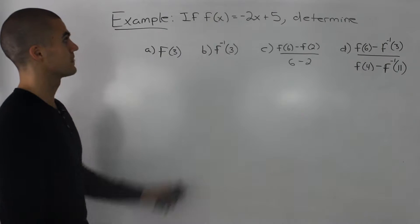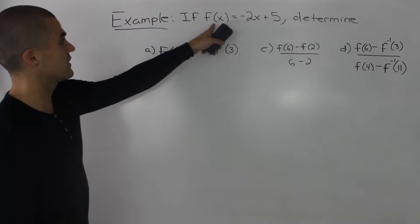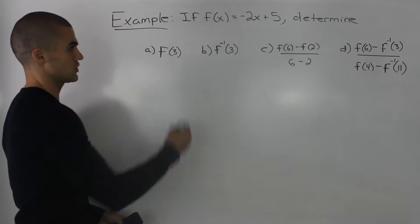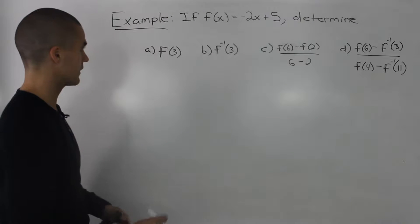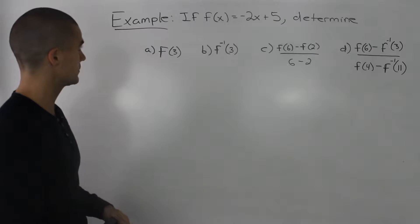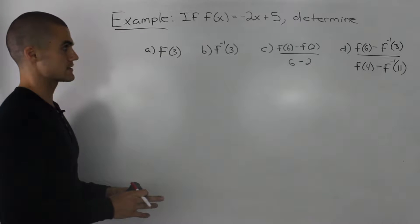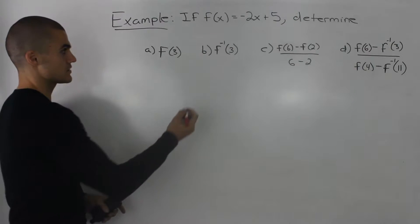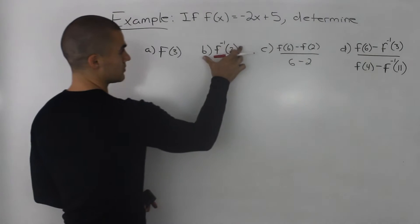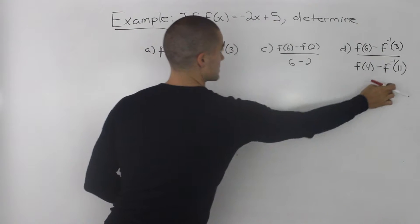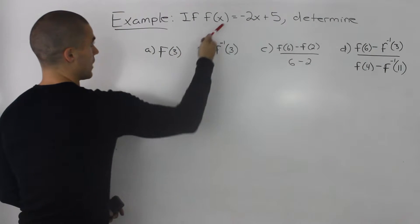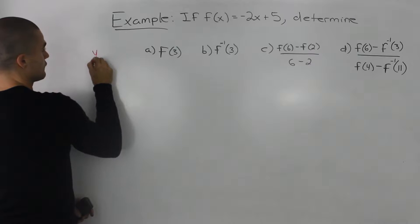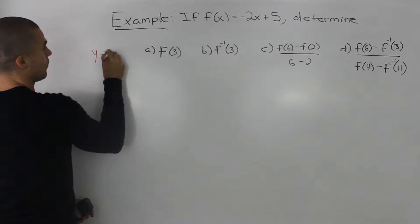Moving on to an example: if f(x) is equal to negative 2x plus 5, determine each of the following. The first thing I'm going to do is find the inverse, because we're going to be using it within this question. So I'm going to rewrite this function, but instead of f(x) I'm going to put y.